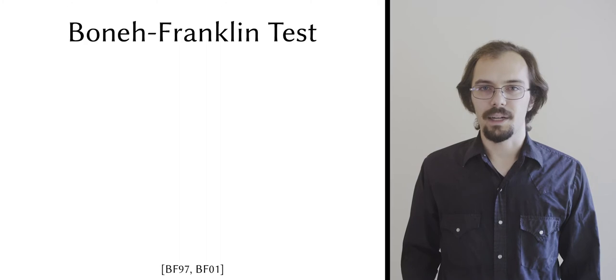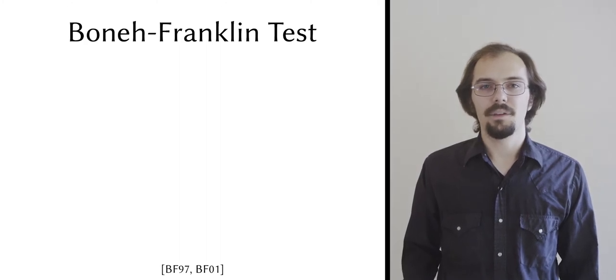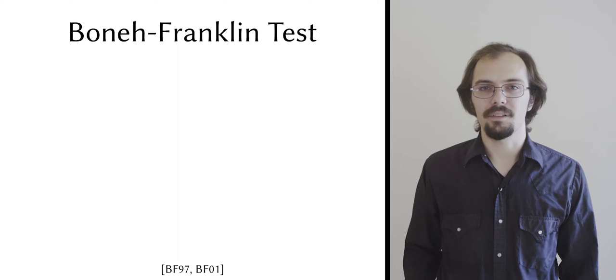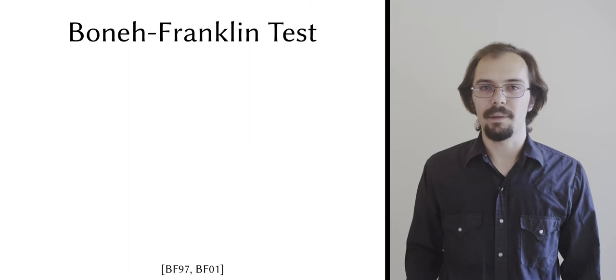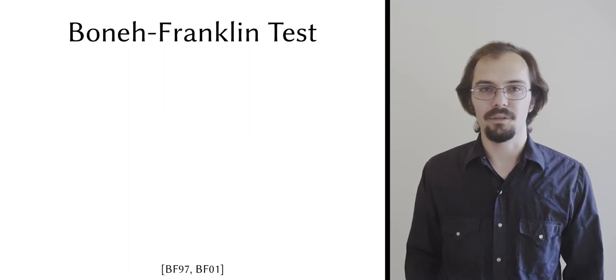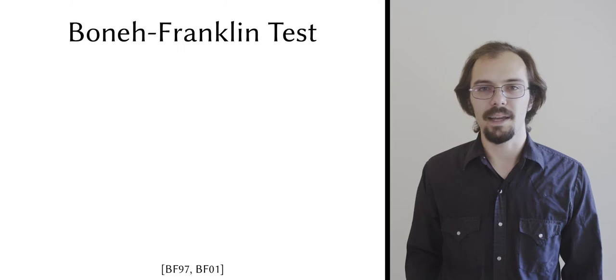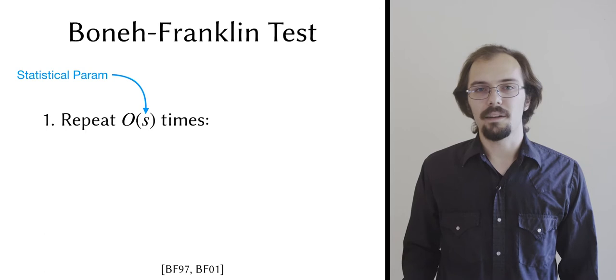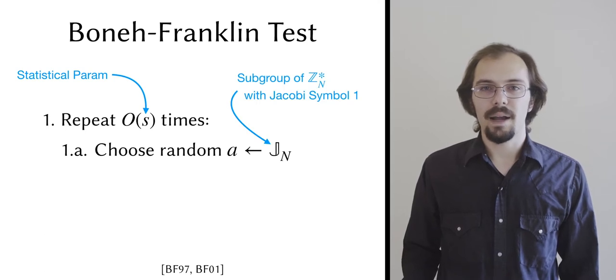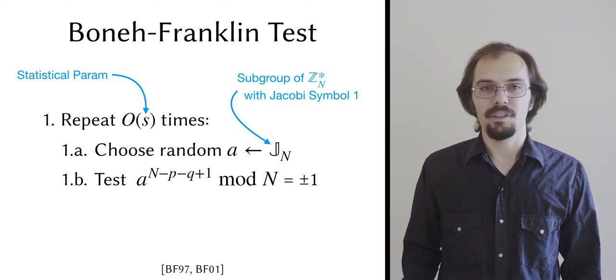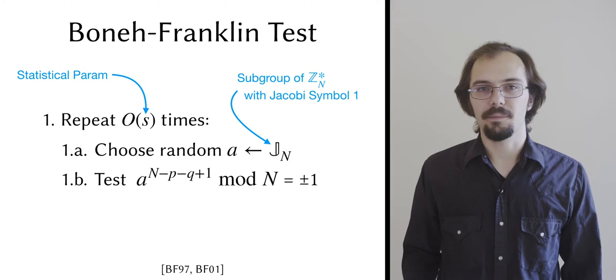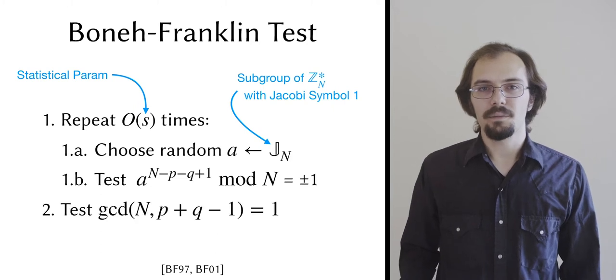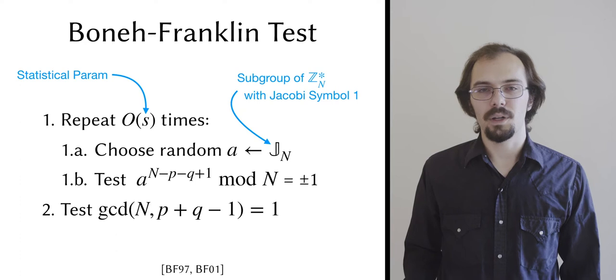Boneh and Franklin were the first to recognize this, and in the seminal paper on this topic, they devised a more efficient test in the semi-honest setting. Rather than testing the primality of two individual numbers, they devised a direct biprimality test that only used the product of the two primes, which is to say, the candidate biprime n. For some statistical parameter number of iterations, they choose a random base a with Jacobi symbol 1 and take it to the power of n minus p minus q plus 1 modulo n. If this is equal to plus or minus 1 in all iterations, then the test passes. For technical reasons, they also require a GCD test, but we won't worry about this for now.